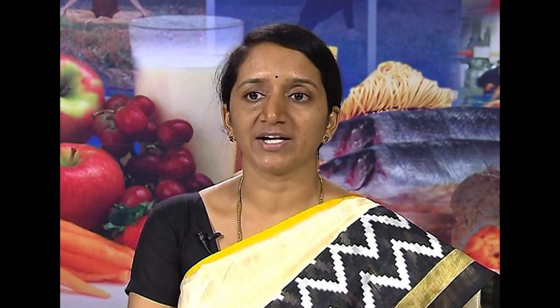Moist heat cooking methods are used for parts of the animal that are either low in fat or tough in musculature. Meat generally won't absorb water during moist heat cooking — it will only exude water. The only thing that will make or keep meat moist is fat. Dry heat cooking methods include barbecuing, broiling, grilling, pan frying, roasting, and stir frying. Dry heat methods are usually used for cuts of meat that are tender or delicate, as tender cuts do not require moisture and long slow cooking.